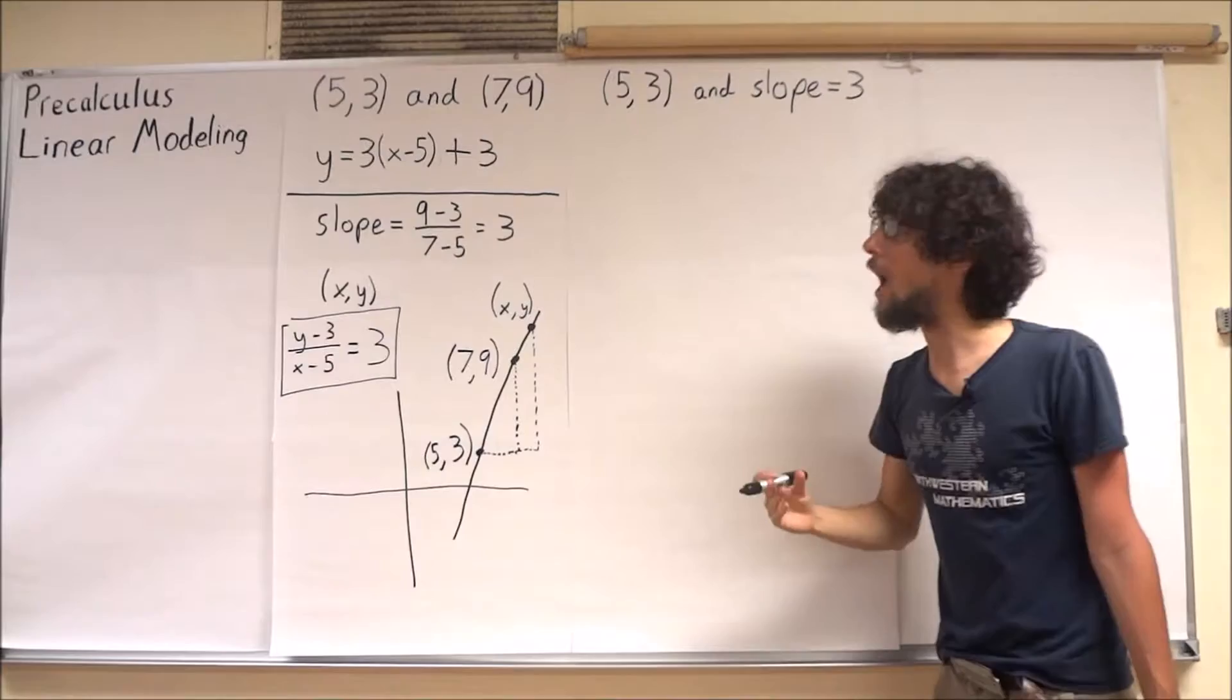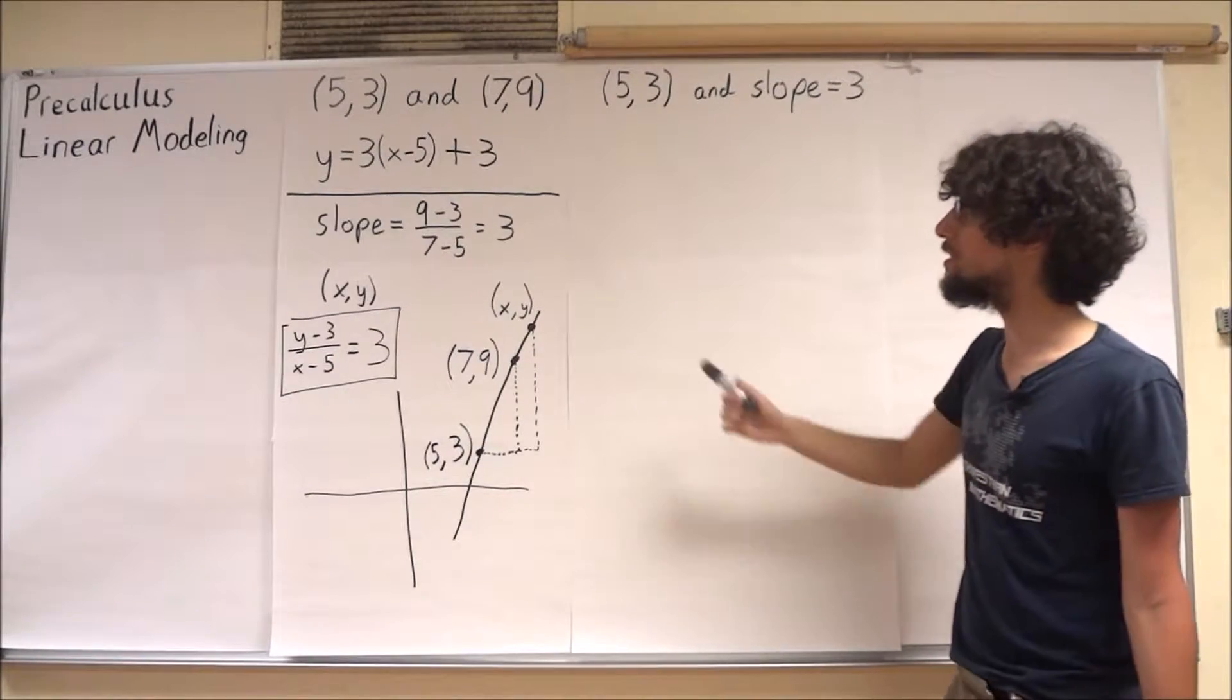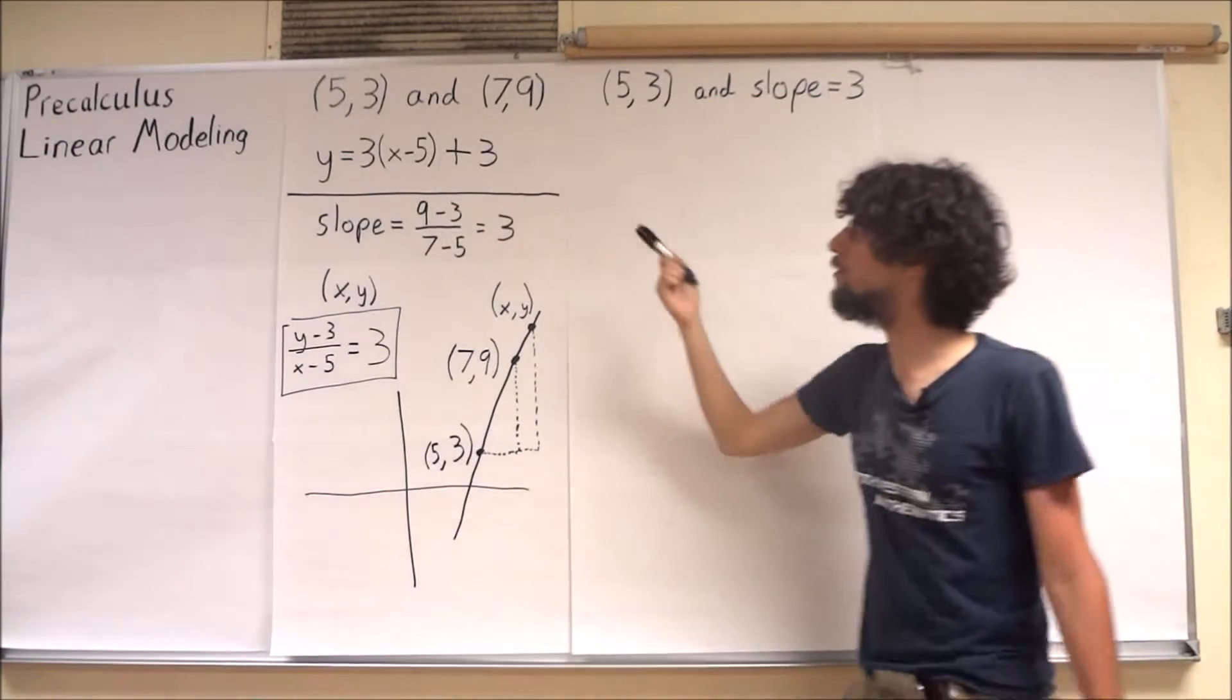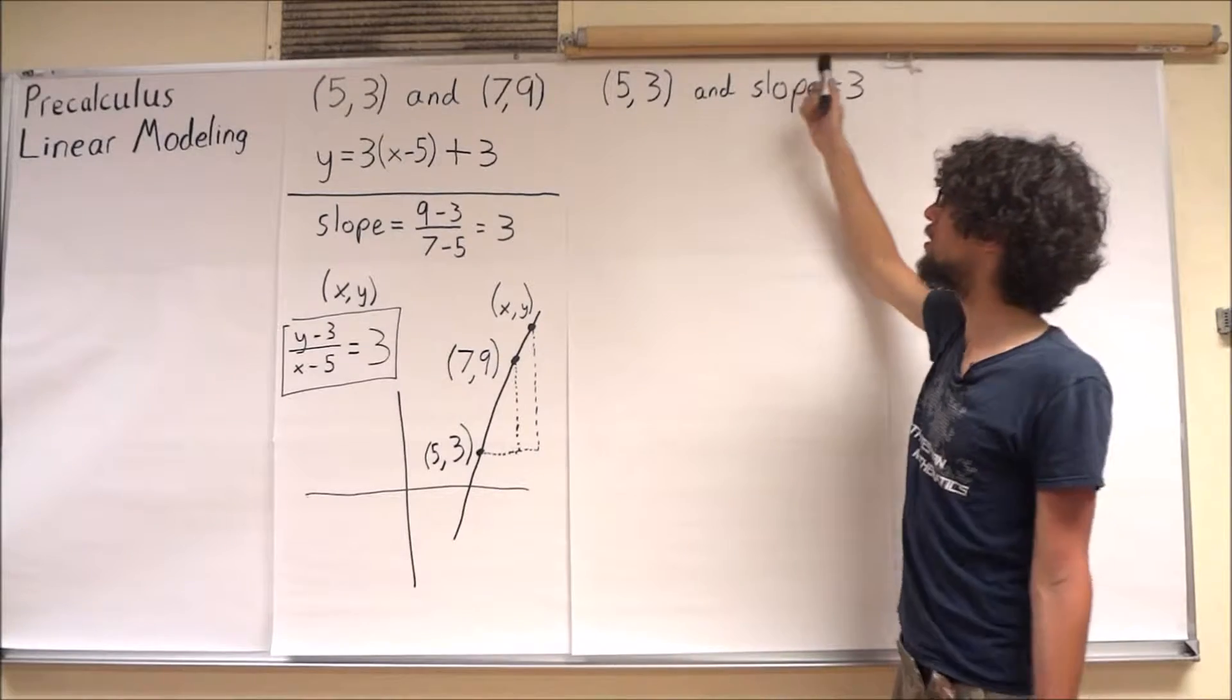I'm looking at the same line again, though this time instead of giving two points, I've given one point and the slope.